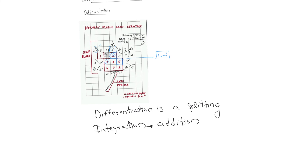So integration is an addition process and differentiation is a splitting process. We are splitting into an infinite number of small parts to get a more accurate value. After splitting, we add all the parts to get the final answer — that addition process is integration, the reverse process of differentiation. In the next part, we will discuss mathematically how to differentiate and how to integrate.